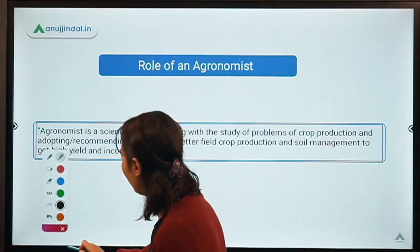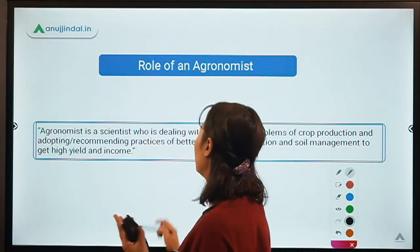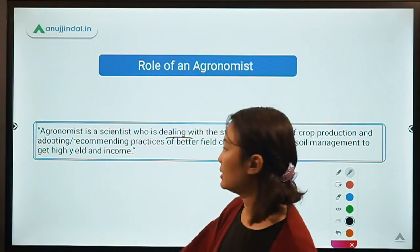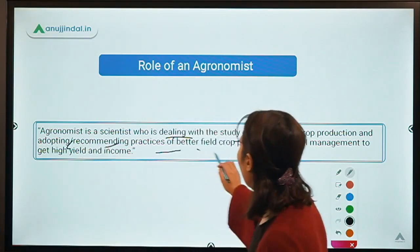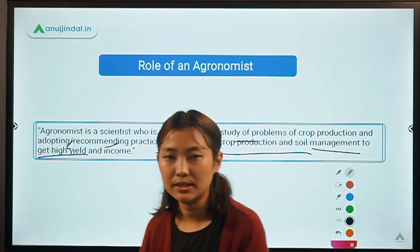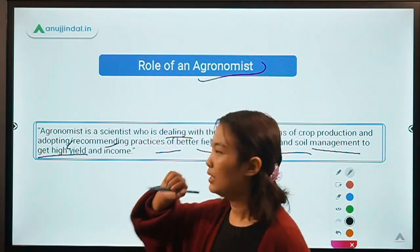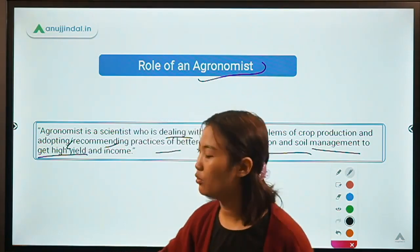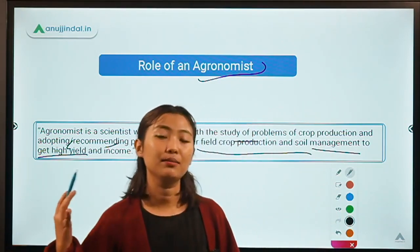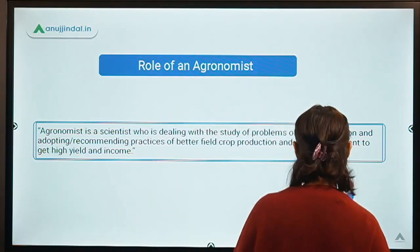Now coming to the role of an agronomist. An agronomist is a scientist or a person who deals with the study of problems of crop production and soil management, and recommends and adopts practices for better crop production, soil management, and to get higher yield and income. Basically, an agronomist is a person who has studied agronomy, and his job is to recommend and implement all practices for better crop production, soil management, and better, higher productivity and return.